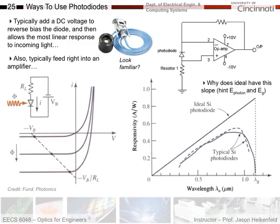If you look at responsivity versus wavelength, some of the meters in this lab will ask you to program in the wavelength. Why does wavelength matter? For a typical silicon photodiode, the responsivity — how many amps you get out per watt of light in — increases, then peaks, and then decreases. You need to program the wavelength so that when the meter gets one milliamp of current, it knows how many watts that corresponds to.